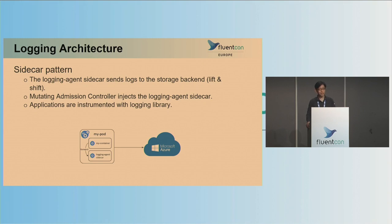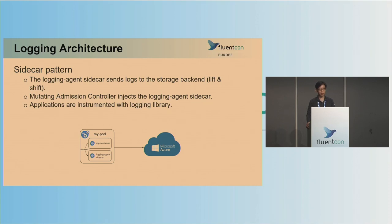The application can enable sidecar injection by adding annotations in their deployment spec. In our case, the logging agent sidecar is a Microsoft internal agent, but technically you can replace the logging agent sidecar with FluentBit. To send the logs to the logging agent sidecar, we instrument the application with a logging library. One downside is that when you have applications written in different languages, you have to support multiple logging libraries.